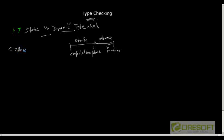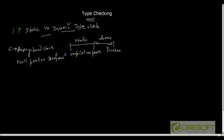C also provides some dynamic checks, like array bound checking, which is dynamic in nature. Another kind of dynamic type check is null pointer dereferencing — we cannot dereference a null pointer. In this way, type checks are classified as static and dynamic.